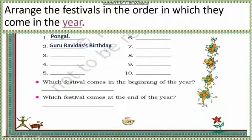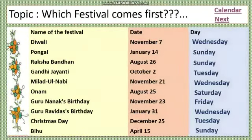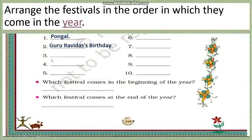January is done. February — no festival. Then March — also none. Then April — yes! April 15th is Bihu. So next would be Bihu.